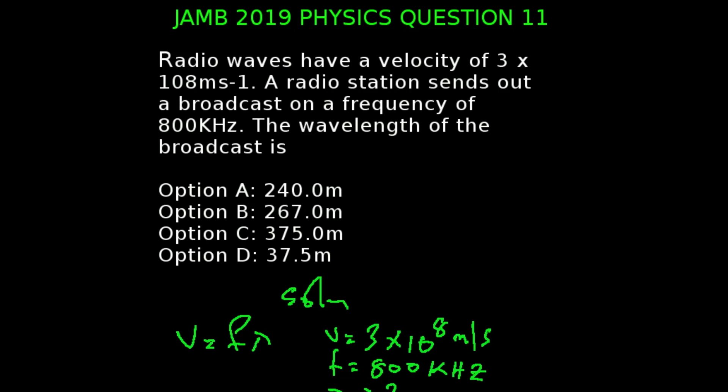JAMB 2019 physics, question number 11. Radio waves have a velocity of 3 times 10 to the power of 8 meters per second. A radio station sends out the broadcast on a frequency of 800 kilohertz. The wavelength of the broadcast is